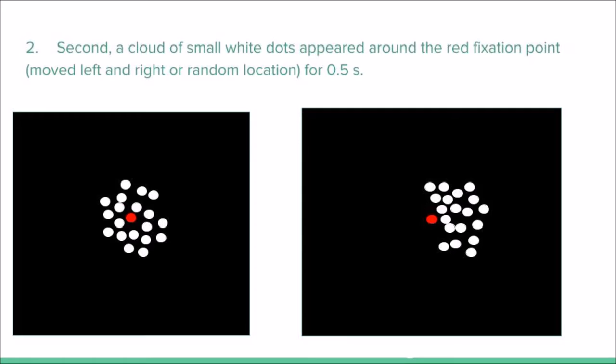These white dots move in the left or right direction for half a second. The white dots are shown on the frame and then presented in one of the directions three frames later. The images below show the movement of the white dots in the right direction. To reiterate, a reward would not be given here.